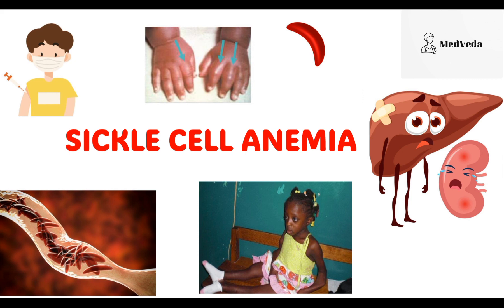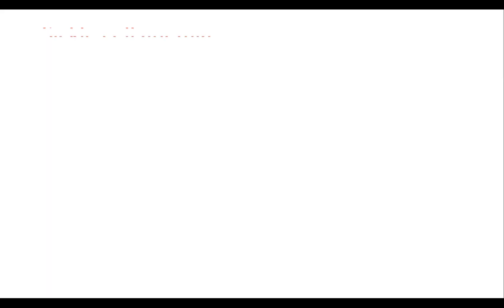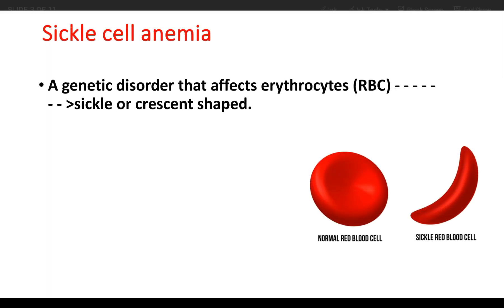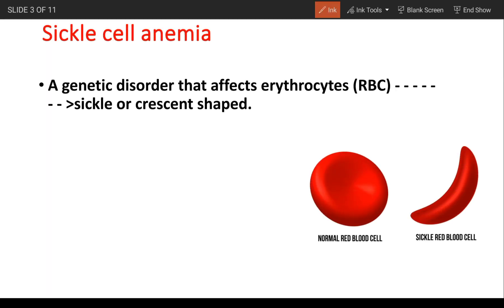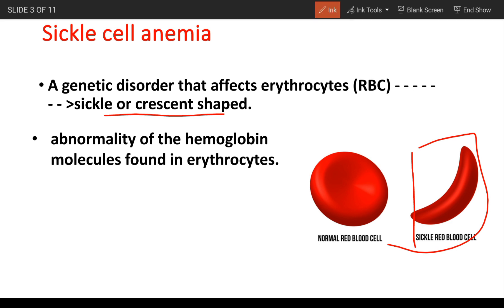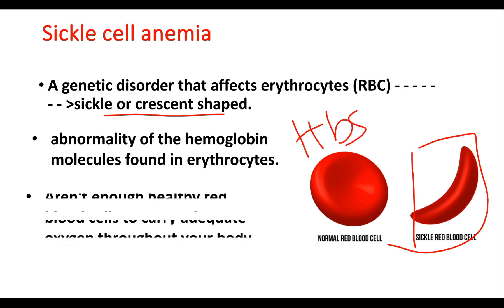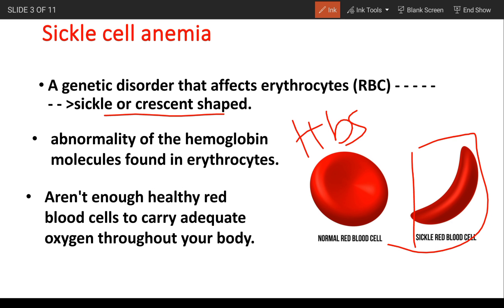Sickle cell anemia is a genetic disorder impacting red blood cells, causing them to become sickle or crescent shape due to abnormal hemoglobin, that is hemoglobin S gene. This misshapen form hinders the cells' ability to carry sufficient oxygen, leading to a shortage of healthy RBCs in the body. This premature destruction of RBCs is known as hemolytic anemia.